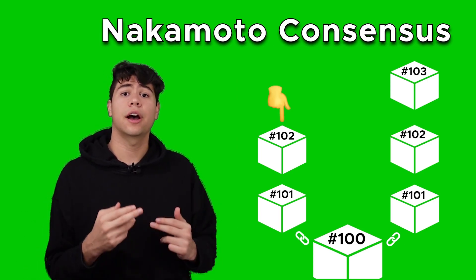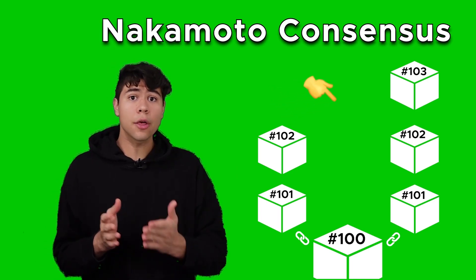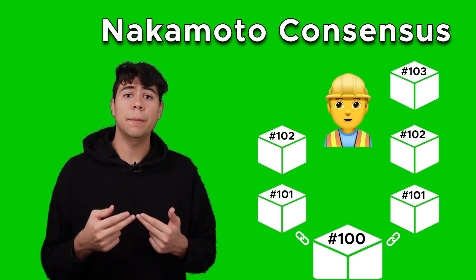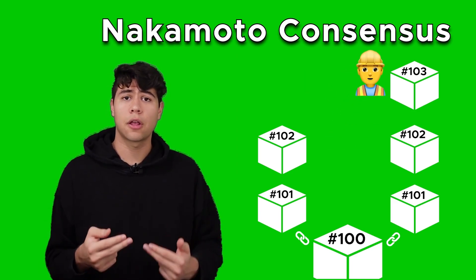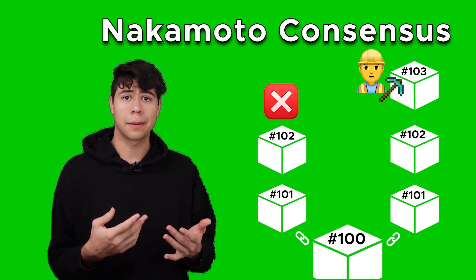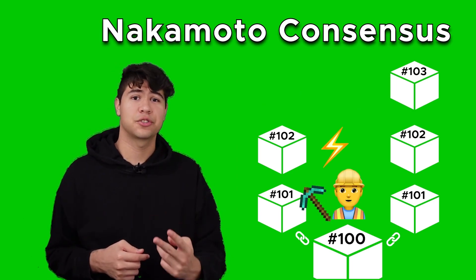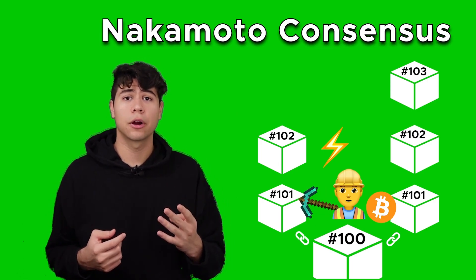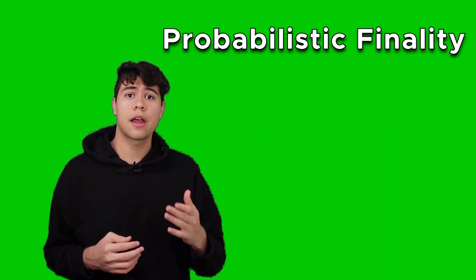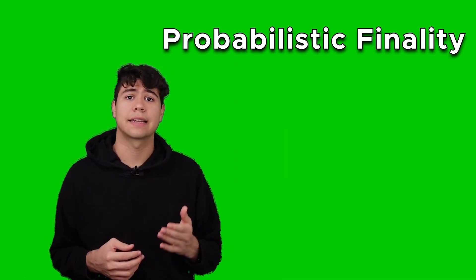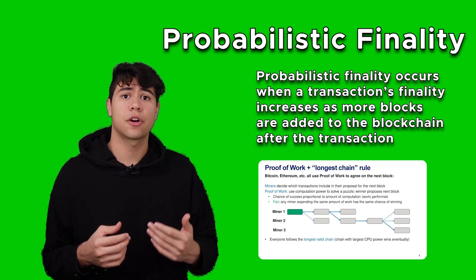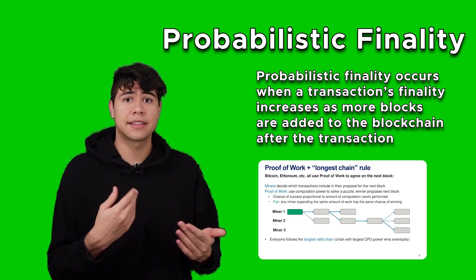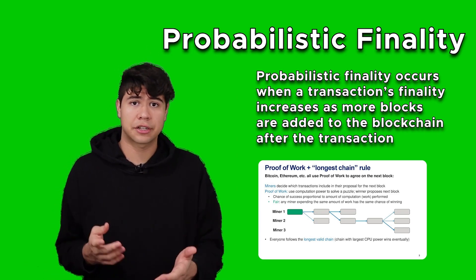Meaning that your fork of Bitcoin is only 102 blocks tall, while the other fork is 103 blocks, making it the longest. So when Bitcoin miners start mining for the next block, they're going to choose the longest fork, making your fork completely invalid. All of that work, electricity, your rewards, all those transactions in those blocks — according to the network, are invalid. This is why Nakamoto consensus and proof-of-work has probabilistic finality, meaning there's a chance your transactions get reverted because they were on the wrong fork.